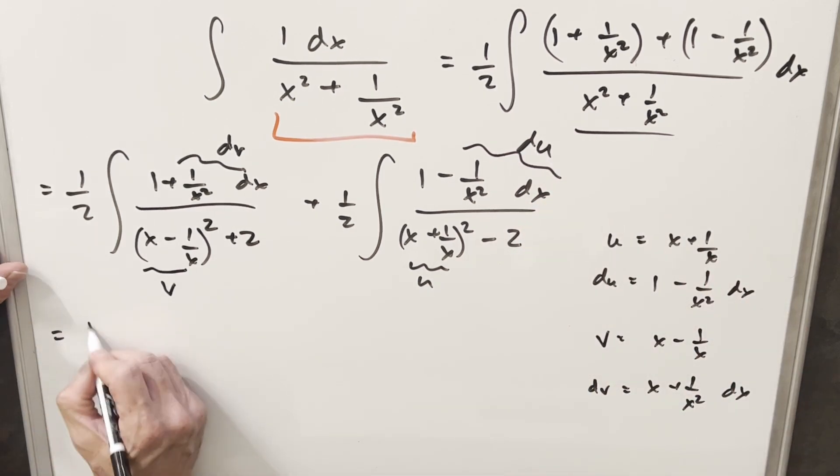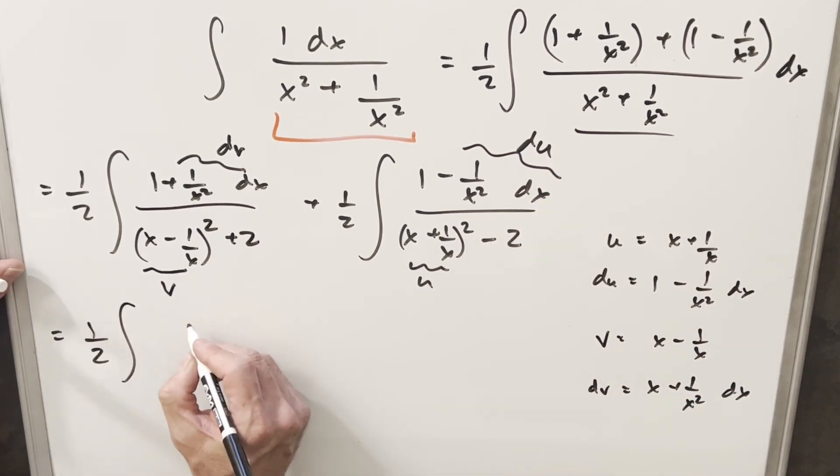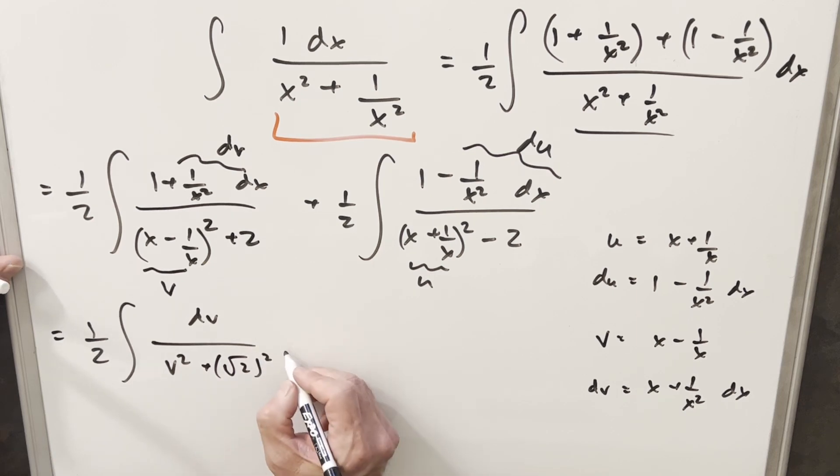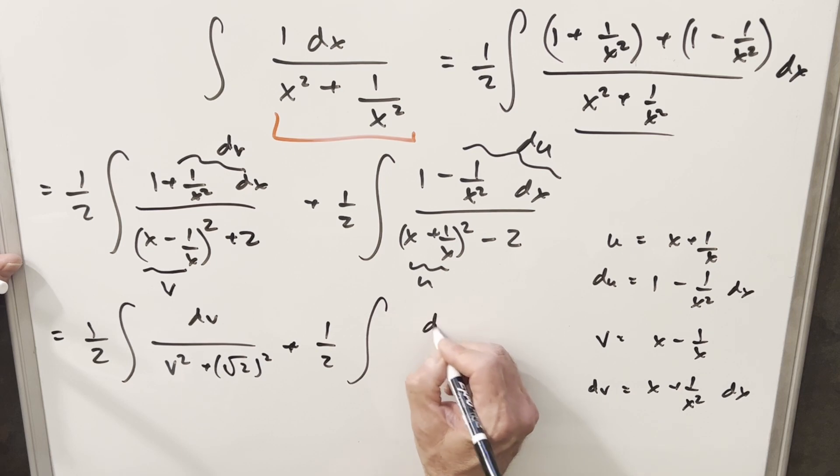So let's just make the substitution so it's really clear. So in the numerator, we're going to have dv over v squared. For 2, I'm going to write this as square root of 2 squared. And then similarly over here, we're going to have, in the second one, we're going to have du over u squared minus square root of 2 squared.